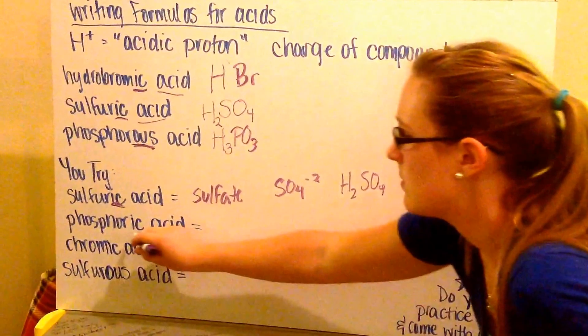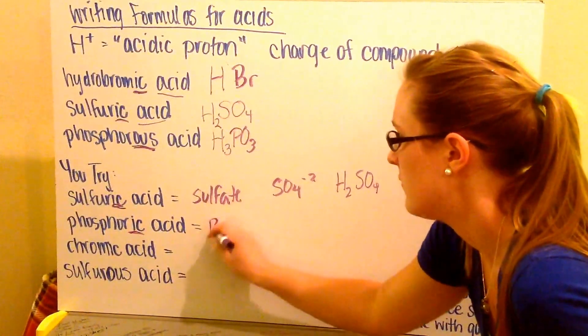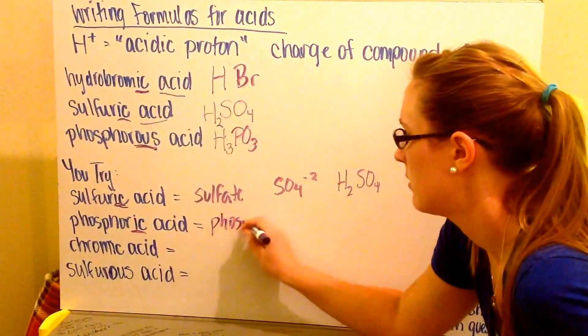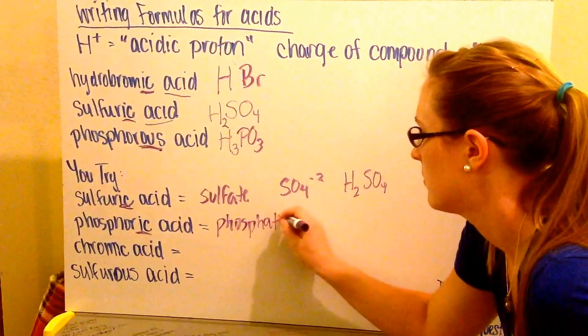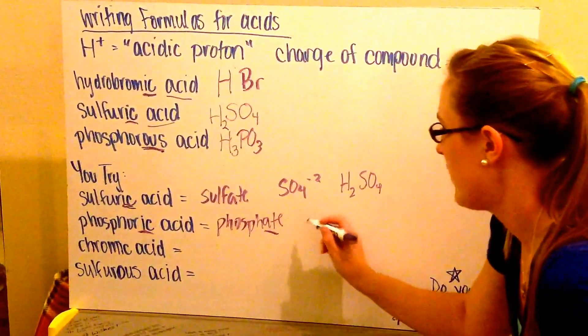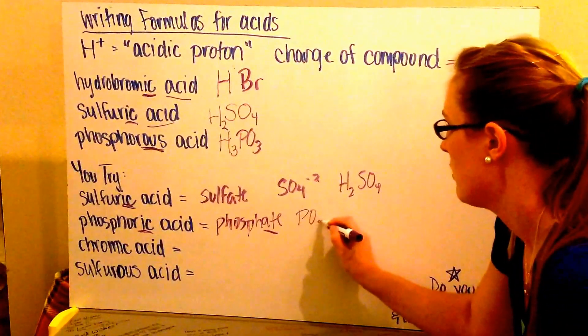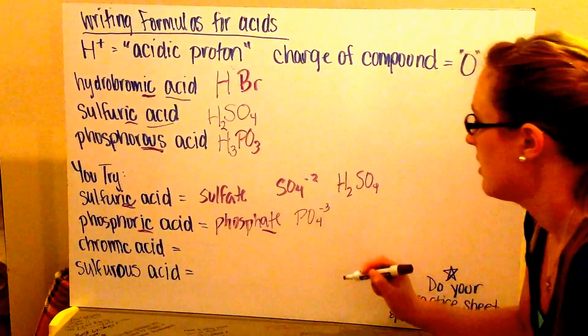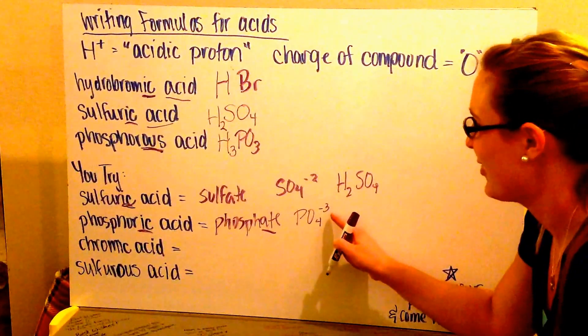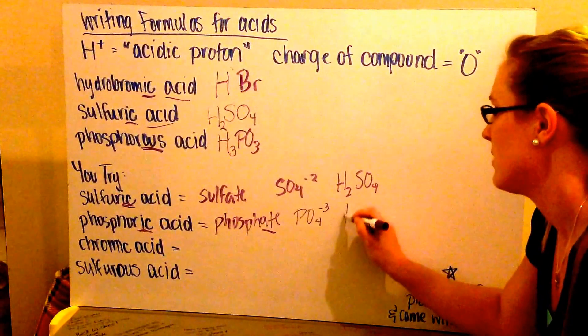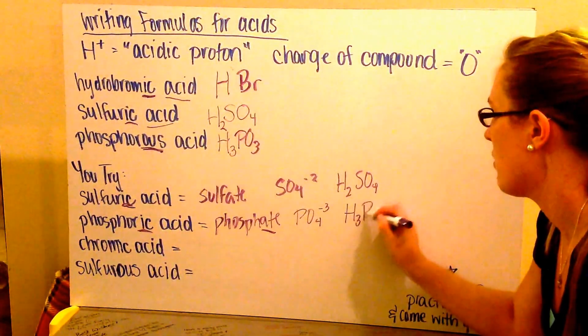My next one, phosphoric acid, means I had phosphate. I look to find phosphate, and that is PO4 minus 3, which means I need to have three hydrogens in front to balance out that charge. So I have H3PO4.